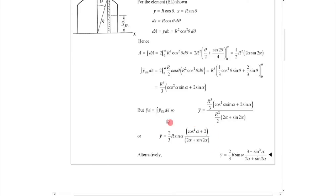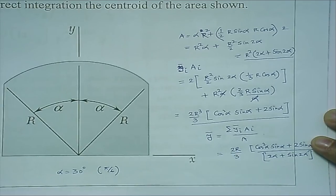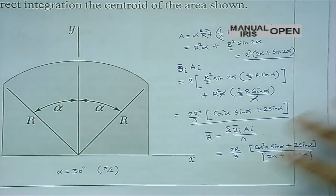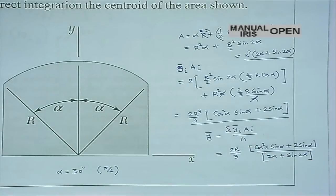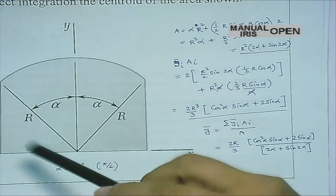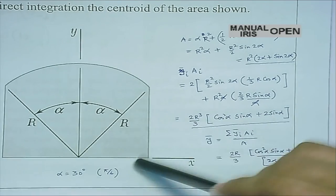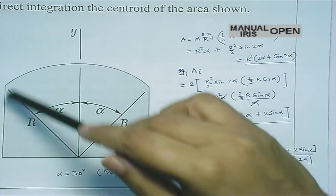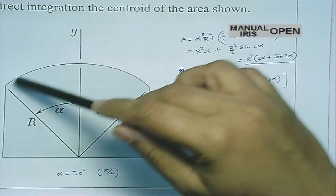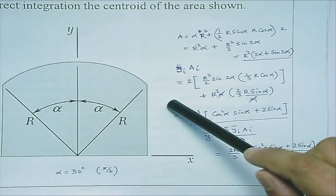Now you can verify also your answer by the composite area. If you want to do it in a composite section form, see, basically I have 2 triangles and then I have the sector here. I take this as a circular sector and then I have 2 triangular areas.